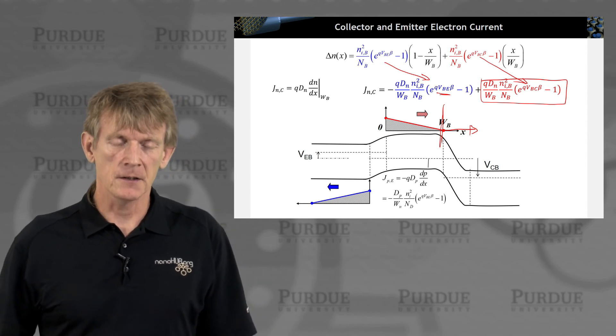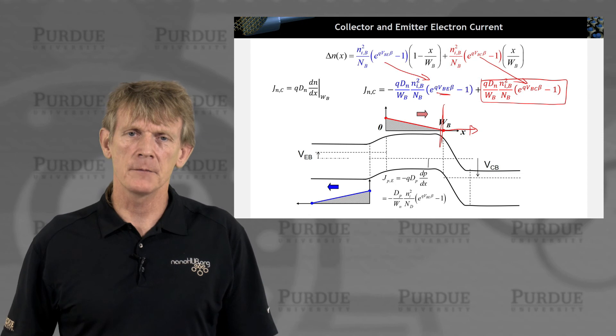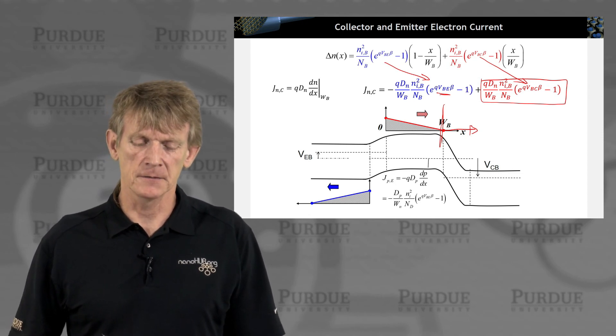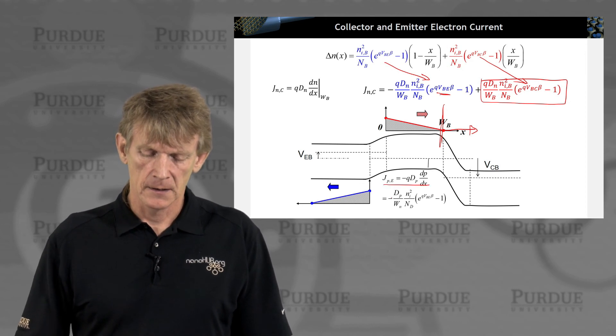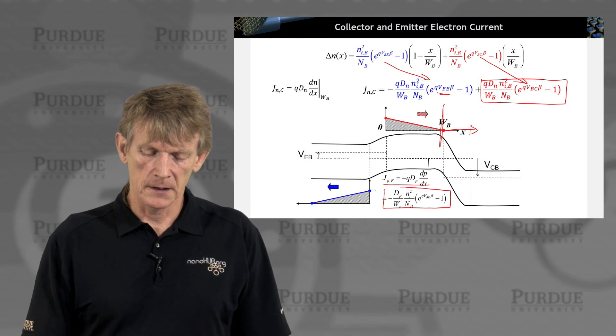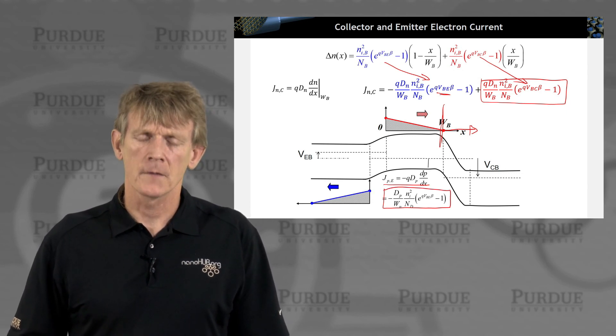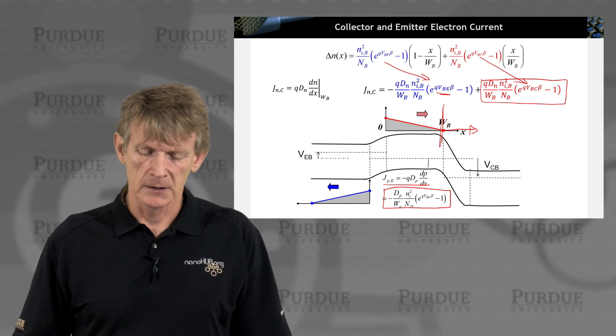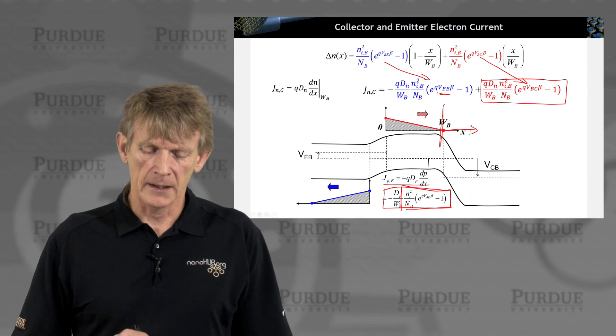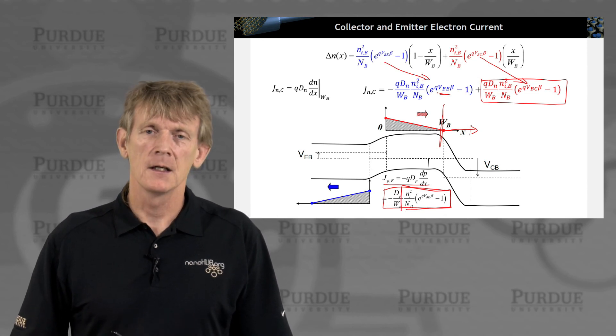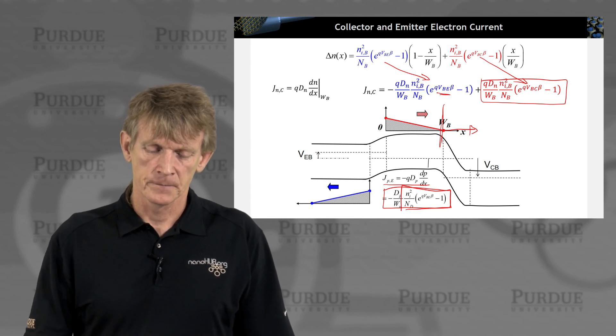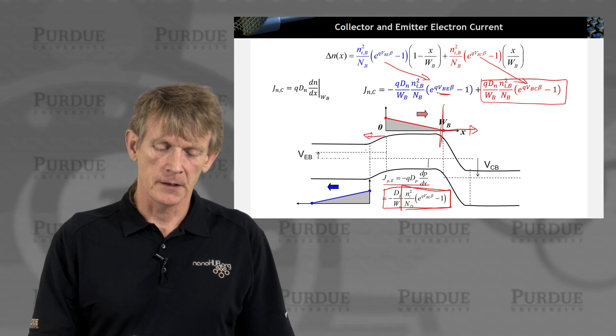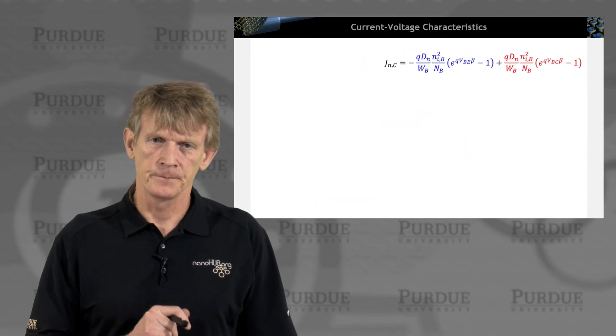We can also calculate on the emitter base side the hole current that is being injected. We had an expression for the current as a differential of p. We had written down the excess minority carriers, which is holes in the emitter. So we have an expression also for the holes that are being injected as minority carriers here.